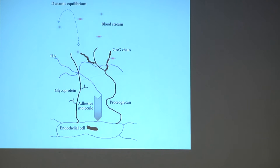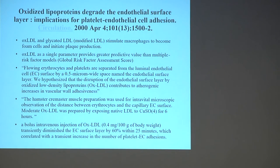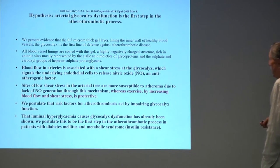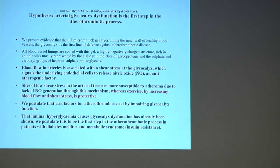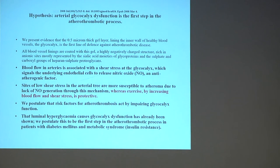How much each of these contributes remains debatable. The glycocalyx covers the endothelial cell and is about five times the width of the endothelial cell itself. Oxidized lipoproteins degrade the endothelial surface. There is a hypothesis that arterial glycocalyx dysfunction and interruption is the initiating event, or at least contributes significantly to plaque formation. Low blood flow in arteries is associated with shear stress of the glycocalyx.